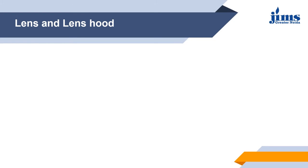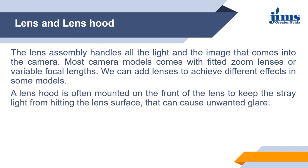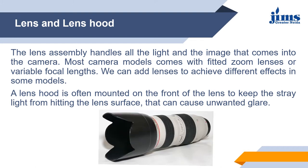The lens assembly handles all the light and the image that comes into the camera. Most camera models come with a fitted zoom lens or variable focal length. We can add lenses to achieve different effects in some models. The lens hood is often mounted on the front of the lens to keep stray light from hitting the lens surface, which can cause unwanted glare and ruin our footage. Here in the image we can see the lens with the lens hood — the black part in the front.